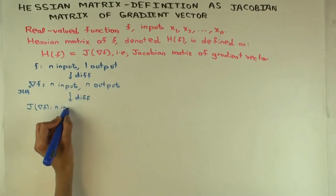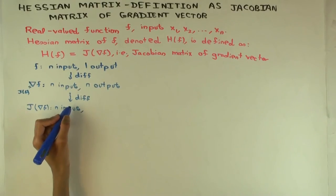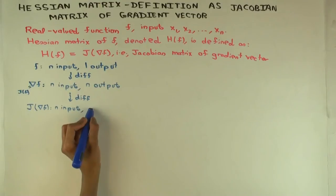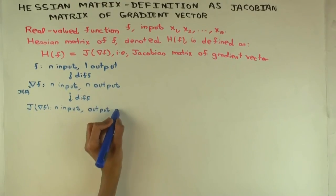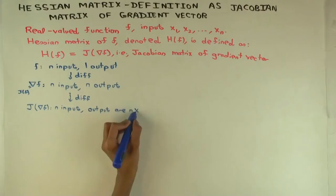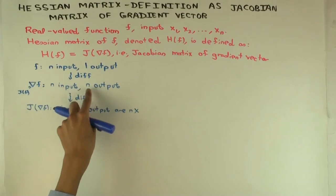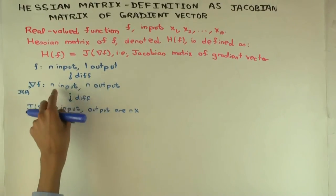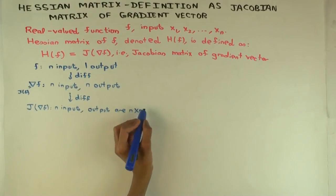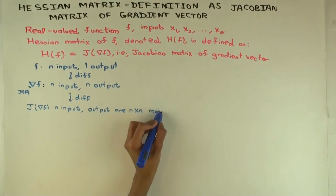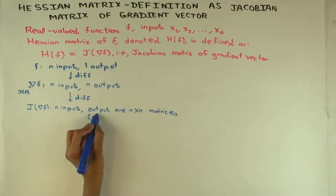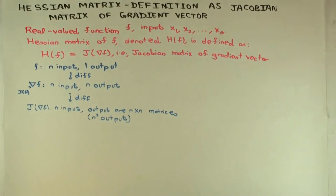So it'll have n inputs. Now how many outputs will it have? Well the outputs will be n cross n matrices. So outputs are n cross n matrices. In general, if you have n inputs and m outputs, the outputs will be m cross n matrices. So it'll have number of outputs cross number of inputs matrices, but here the numbers are the same. The outputs are n cross n square matrices. And so they're what you can think of as n square outputs if you're just thinking of them without the matrix structure.